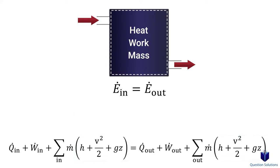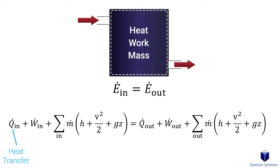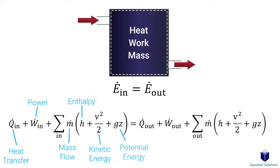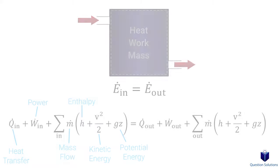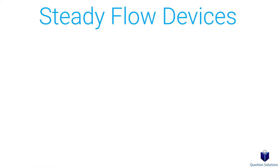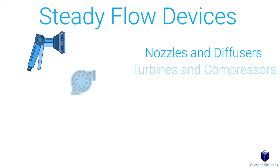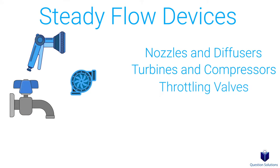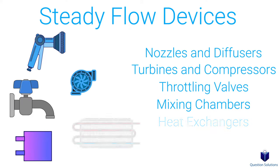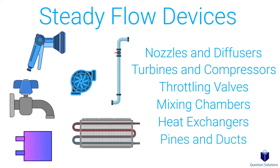Let's go through each term. This is the rate of heat transfer between the system and the surroundings. This is power. This is mass flow. This is enthalpy. This is the kinetic energy. And this is potential energy. There are many types of steady flow devices, including nozzles and diffusers, turbines and compressors, throttling valves, mixing chambers, heat exchangers, and pipes and ducts.